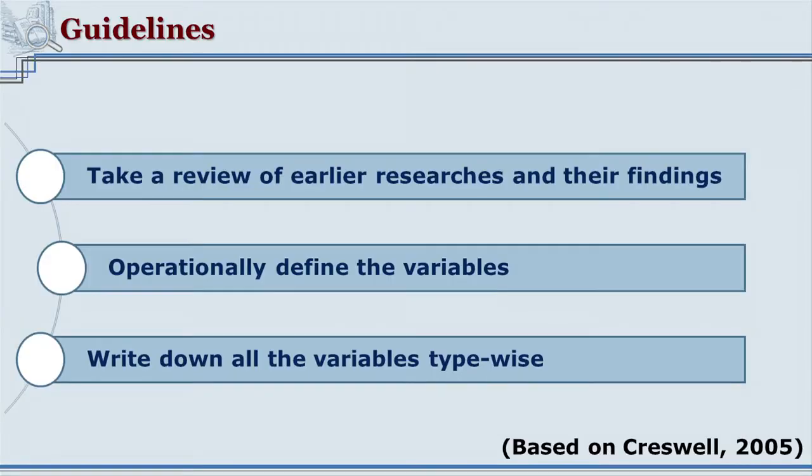Detailing operational definitions is important because we talk of measurement and observation when we discuss them. Once how variables will be measured is fixed, it gives direct grounding for hypothesis writing. The third guideline is writing down all the variables type-wise — listing as many variables as possible that are affecting or playing a role in the situation under study.